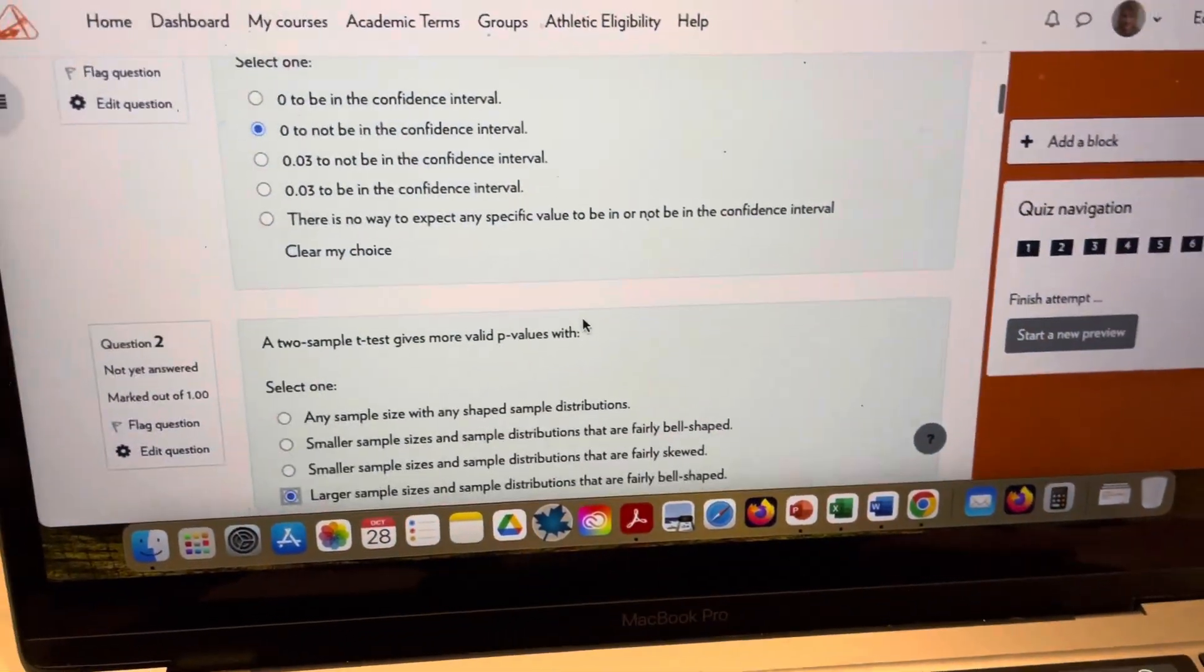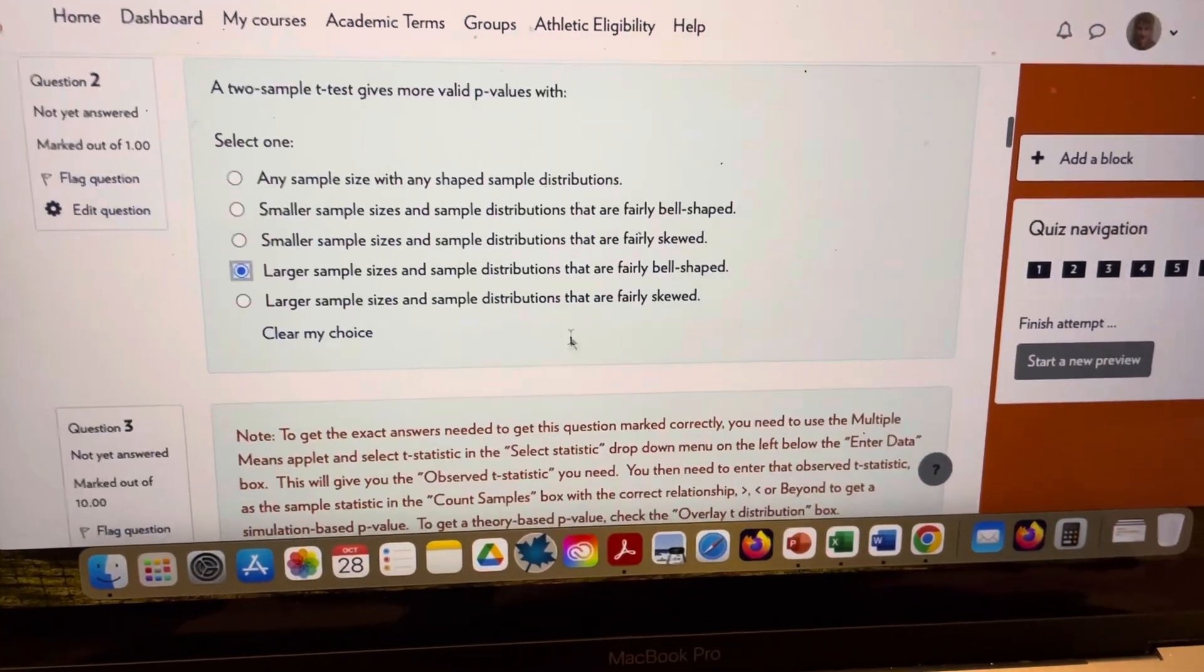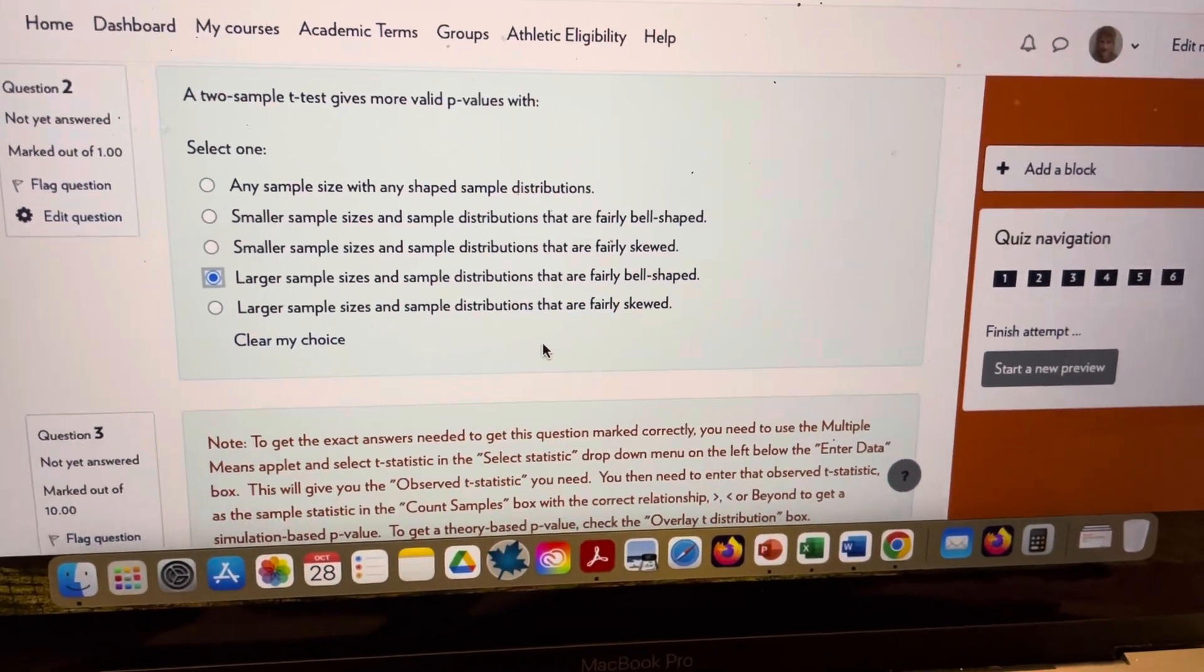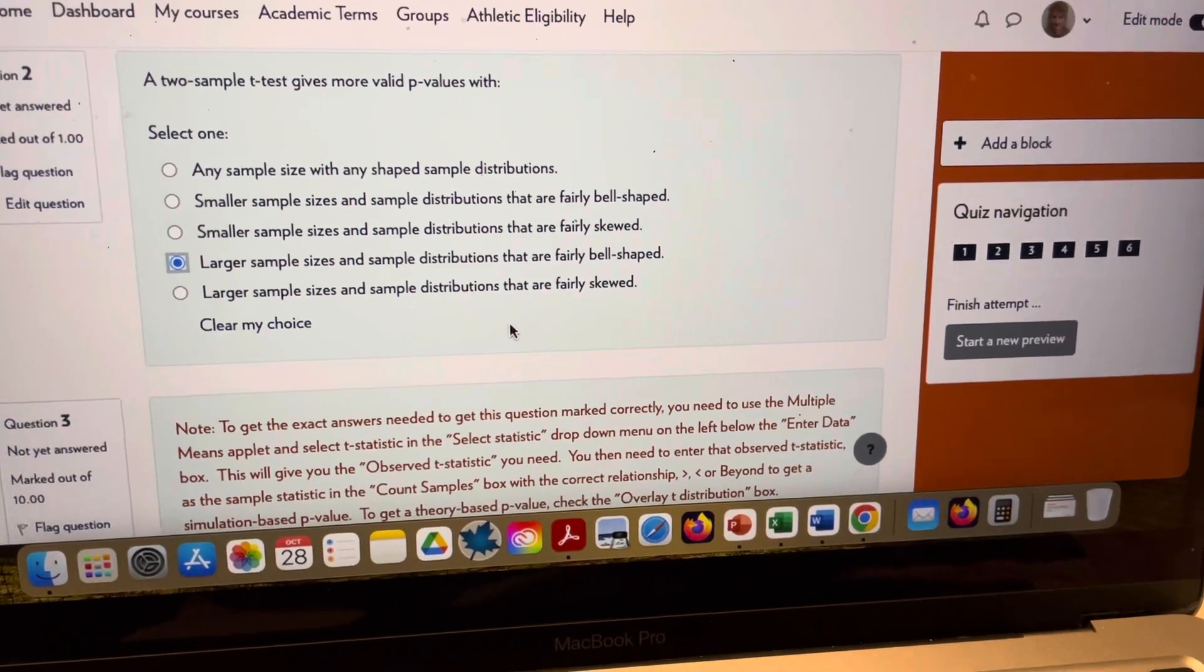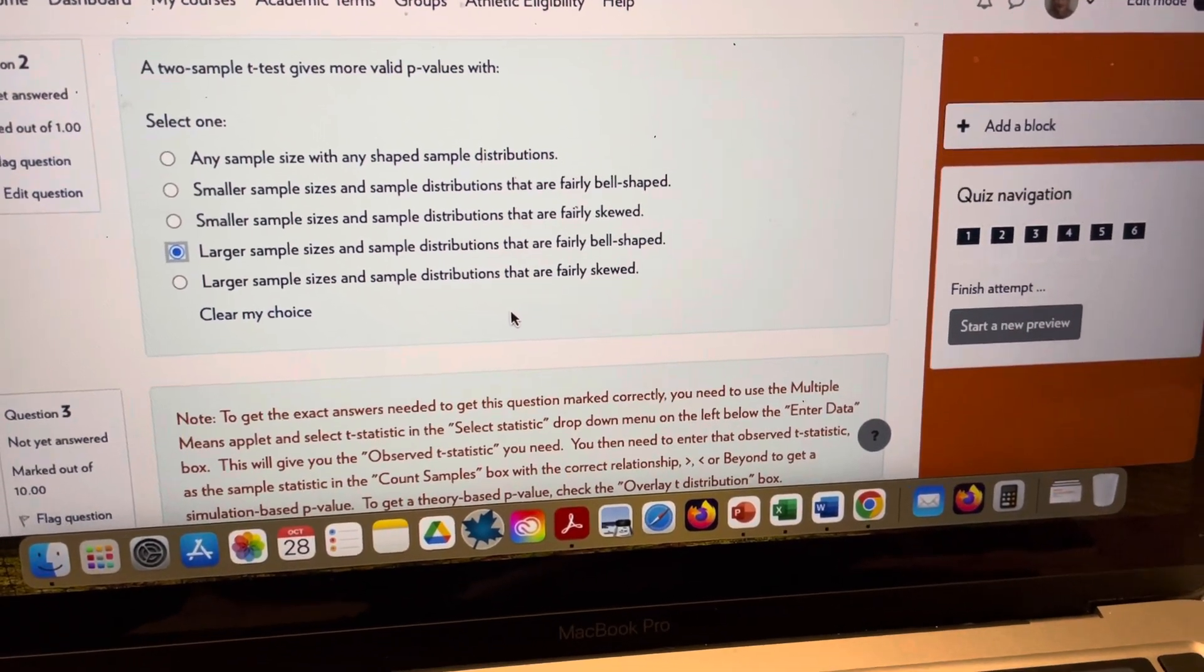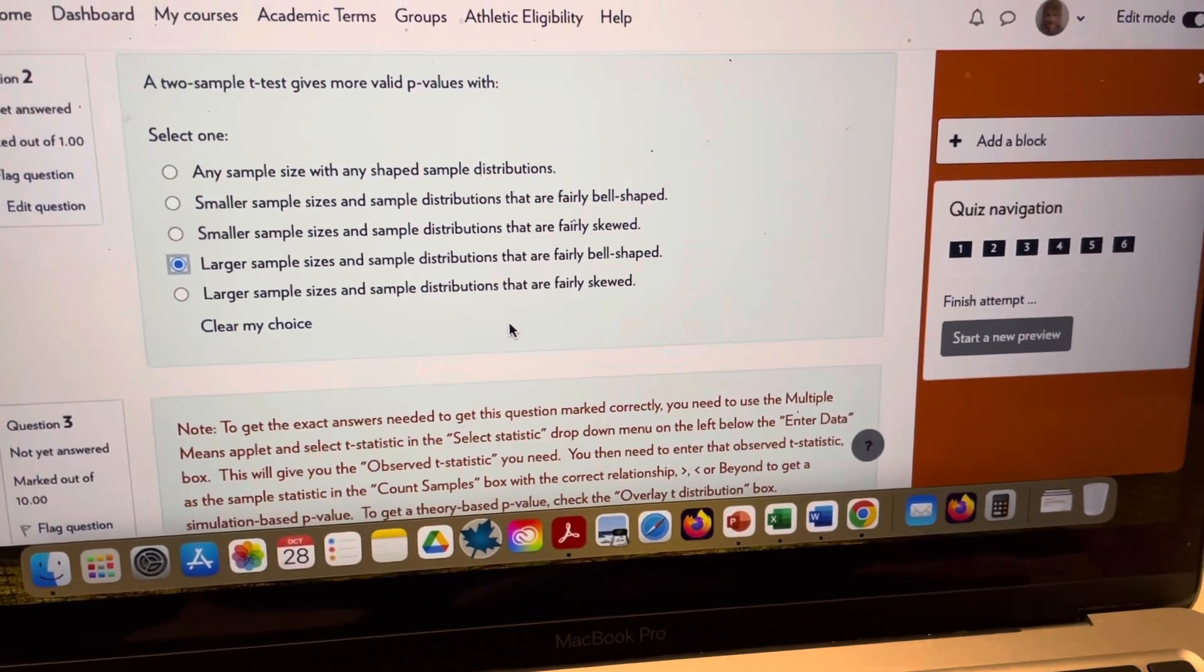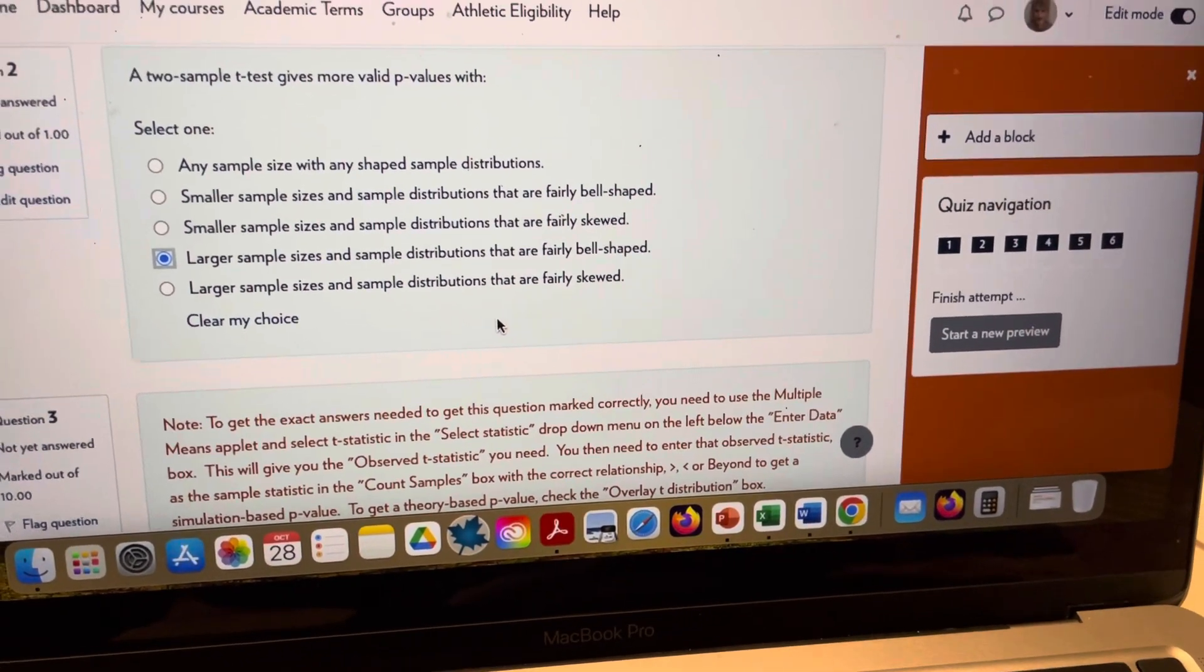Next, number 2. It says, a two-sample t-test gives more valid p-values with. So first of all, if your original population is symmetric and then the larger the sample size is, the better the p-value is going to be.